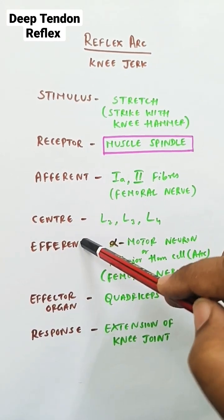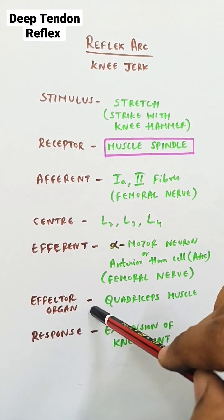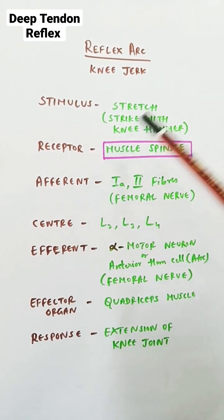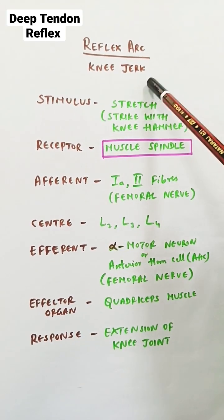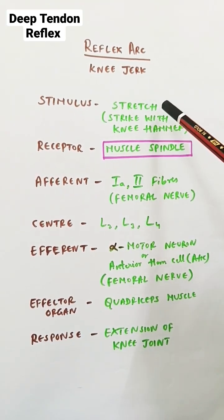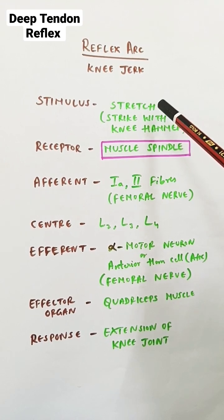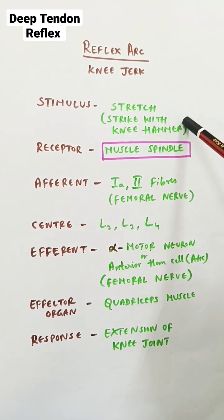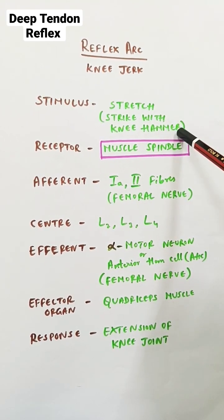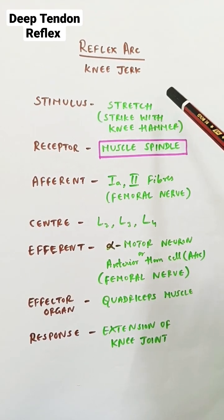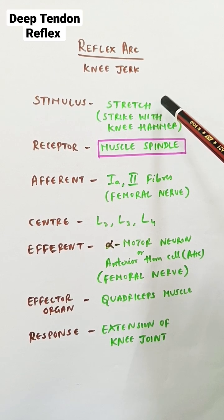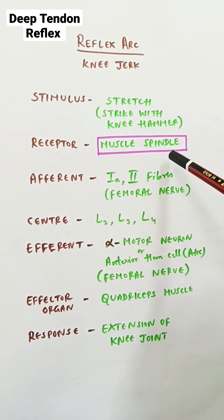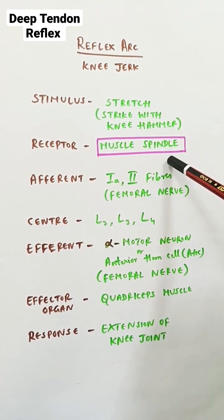From the center, efferent nerves come and supply the effector organ to bring about the response. In the knee jerk example, whenever there is a strike with a knee hammer, the quadriceps tendon will be stretched, and that stretch is detected by the muscle spindle.